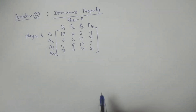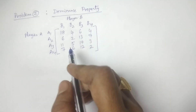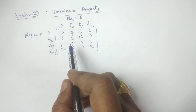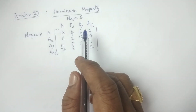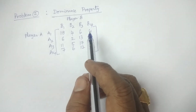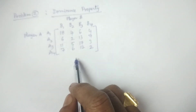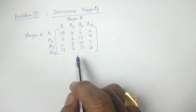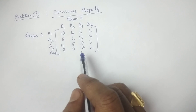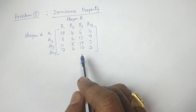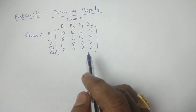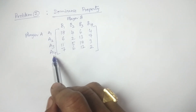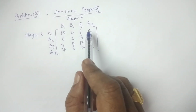Welcome to BSc Statistics students. In this class, I explain one more problem — problem two on the dominance property. We have to solve this by using the dominance principle. Player A and Player B are each having four strategies, and in this particular problem there are four strategies for Player A and four strategies for Player B.